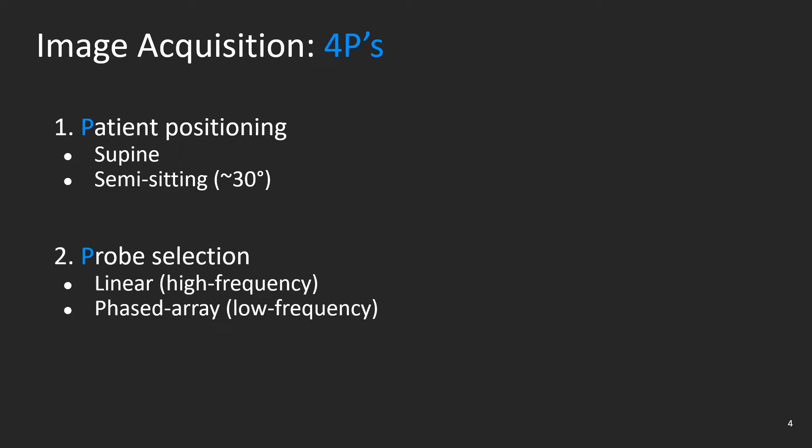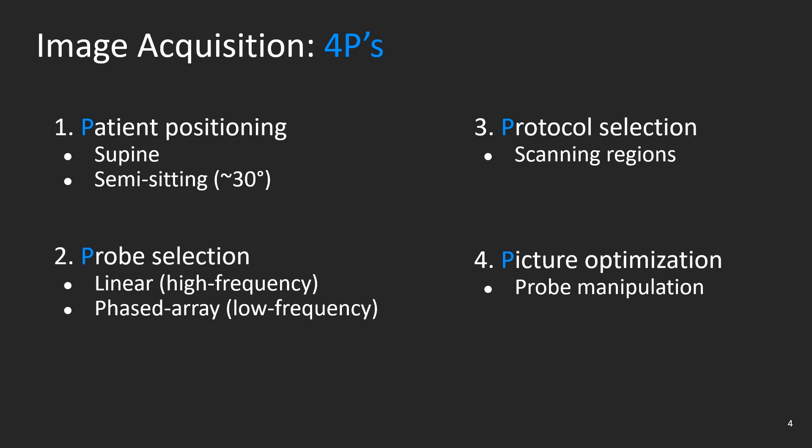The following approach provides practical step-wise guidance summarized in four points or four Ps. The first P is for patient positioning, that is whether the patient should be lying flat or semi-sitting. The second P is for probe selection, whether you use the linear high frequency or the phase array low frequency probe, or both. The third P is for protocol selection, that is the scanning regions over the patient's chest. And the last P is for picture optimization, which involves tips for probe manipulation and knobology.